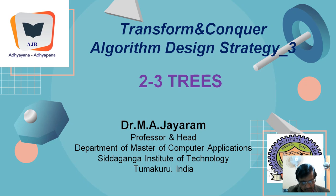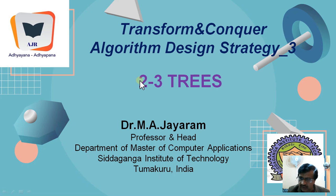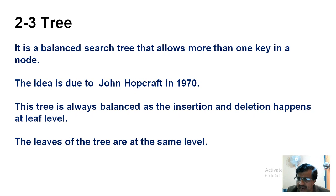This video is a tutorial on 2-3 trees as an example of the representational change version of the transform-and-conquer algorithm design strategy. It comes as a sequel to tutorial number two, where AVL trees and their development algorithm were discussed in detail. While AVL trees are examples of instance simplification, 2-3 trees represent a different kind of construction — a balanced search tree with a different texture.